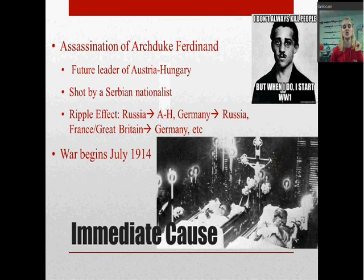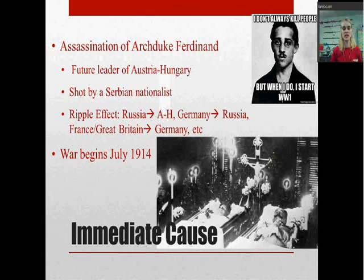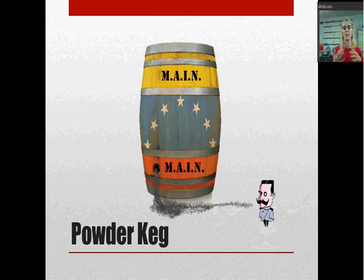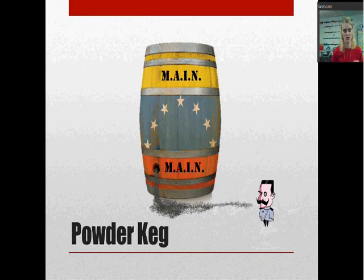War officially begins in July of 1914. A helpful analogy: Europe is often called a powder keg — a barrel full of gunpowder. Inside the powder keg of Europe are our MAIN causes: Militarism, Alliances, Imperialism, Nationalism. They just need one spark to make them explode. And what is that one spark? The assassination of Franz Ferdinand. That's going to lead to Europe starting to simmer and grow until all of Europe explodes.